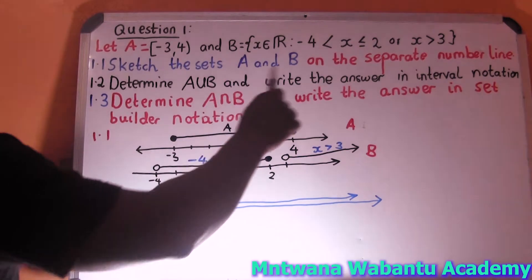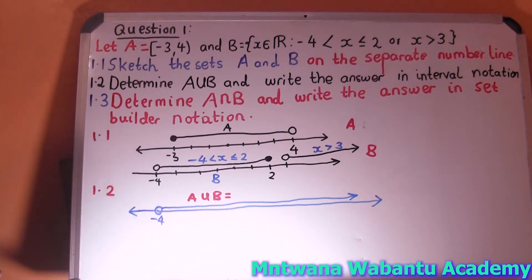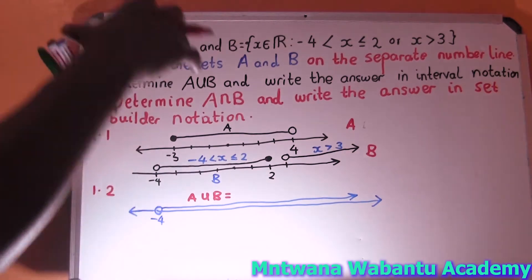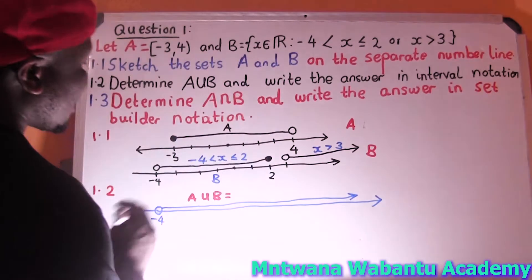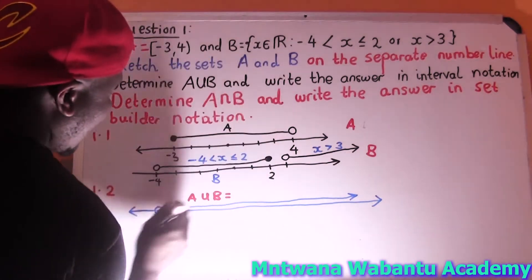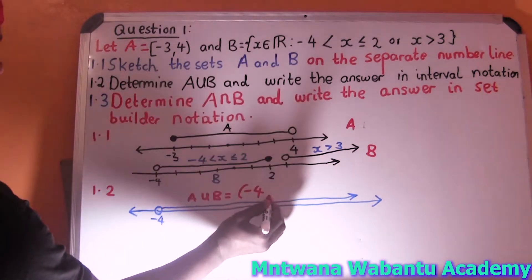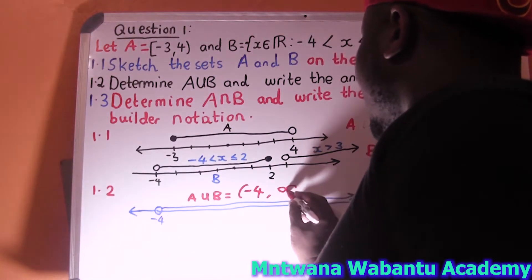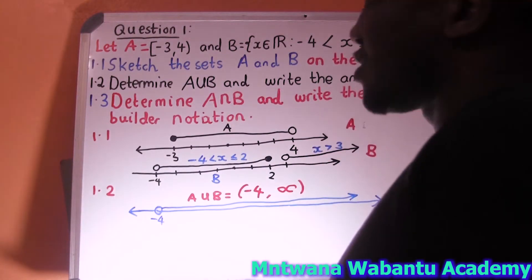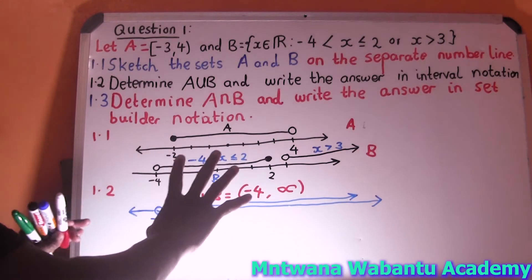They say write your answer in interval notation. Even when they only ask for interval notation, I like to draw the number line first. So for A union B: the starting point is negative 4 — excluding — so we use a round bracket. The final point keeps going to infinity, so we just write positive infinity. That's the interval notation answer.